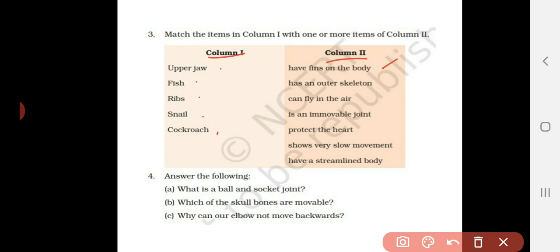Has an outer skeleton, obviously it is related to cockroach. Can fly in the air, it is related to birds. Is an immovable joint, which is a fixed joint, okay? Protects the heart, so it is the role of a particular bone.